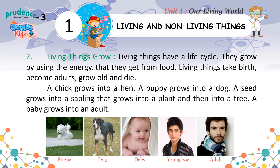A chick grows into a hen. A puppy grows into a dog. A seed grows into a sapling that grows into a plant and then into a tree. A baby grows into an adult.